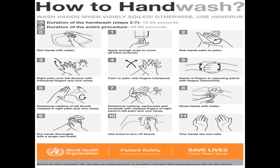Hand hygiene steps: Rub hands palm to palm. Right palm over left dorsum with interlaced fingers. Then palm to palm with fingers interlaced. Back of fingers to opposing palms with fingers interlocked. Rotational rubbing of the thumb. Rubbing of fingers clasped together — left palm, right clasped fingers — in rotational, backward and forward motion. The entire procedure takes 40 to 60 seconds.